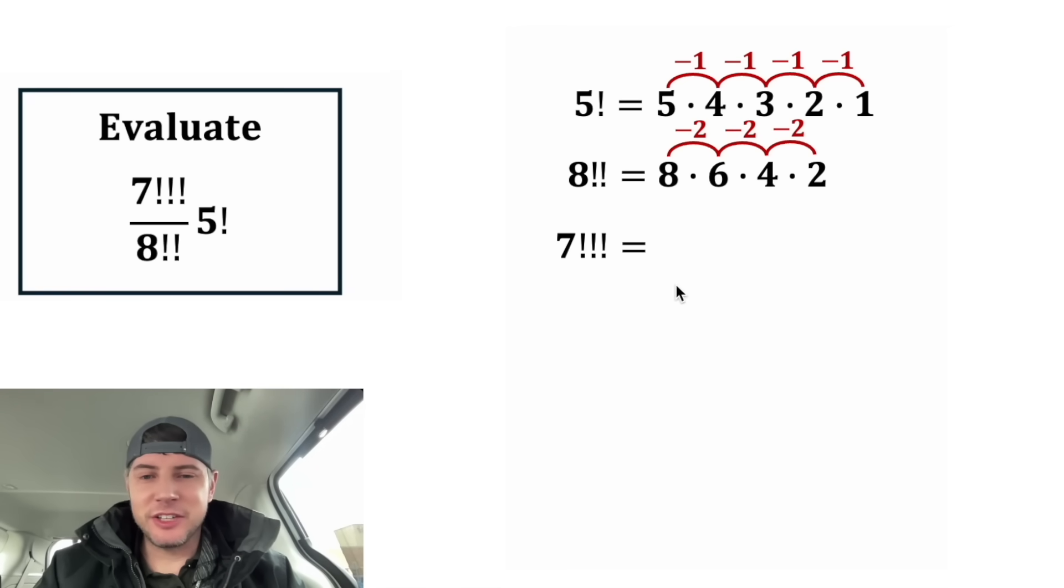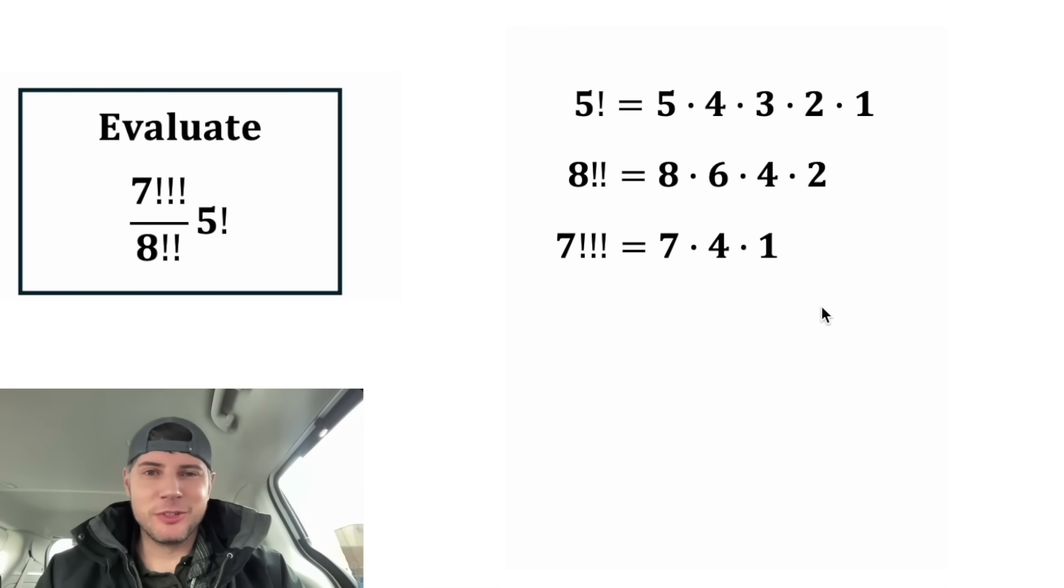And for the 7 triple factorial, that's going to start with 7, and then times 4 times 1. We're going to decrease by 3 each time. And now we know what each of these are equal to. We can clean it up a little. This times 1 isn't doing anything, and this times 1 isn't doing anything.